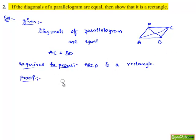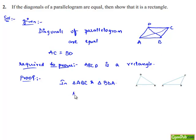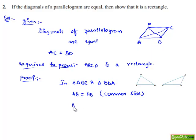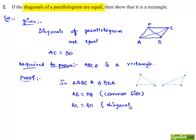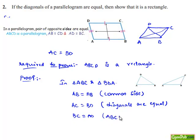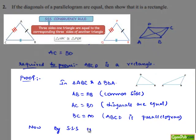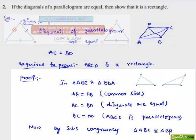In order to prove that, let us follow a procedure. Now let us consider both triangles — triangle ABC and triangle BDA. Let us note the similarities: AB is equal to AB since it is a common side, and AC is equal to BD since the diagonals are given to be equal. Also, BC is equal to AD, as in a parallelogram the two opposite sides are equal. By SSS congruency, triangle ABC is congruent to triangle BDA.